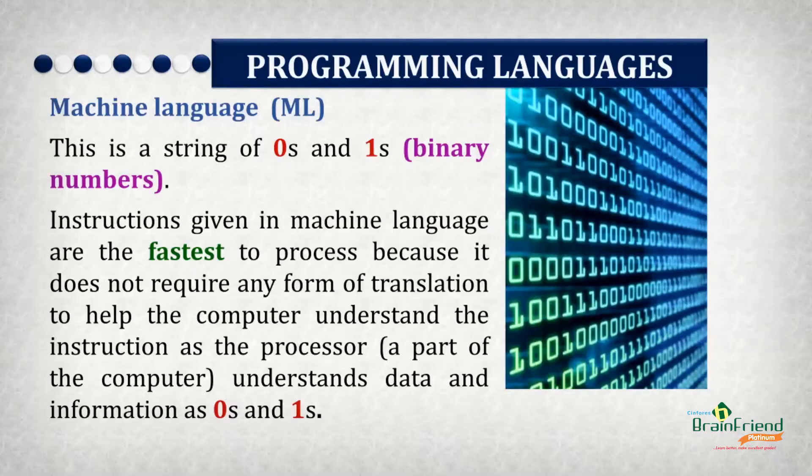Let's take a closer look at each class. The machine language is made up of strings of zeros and ones. Data is represented using zeros and ones, and it is considered the fastest language since the computer understands it directly — there's no need for any form of translation. The type of programming done using machine language was referred to as microprogramming, but it was really tedious because programmers needed to code information using zeros and ones only.